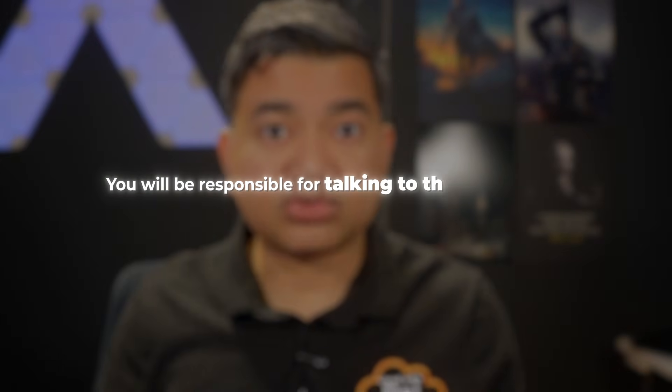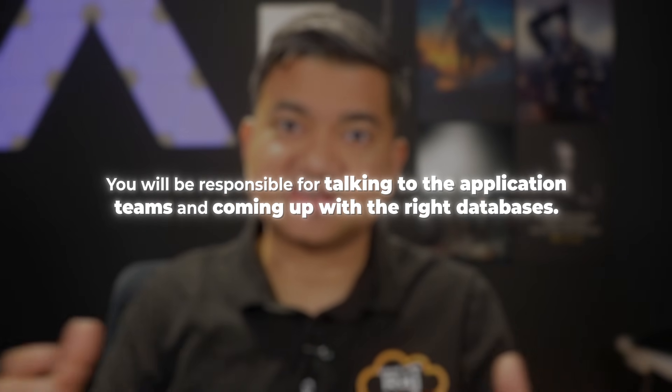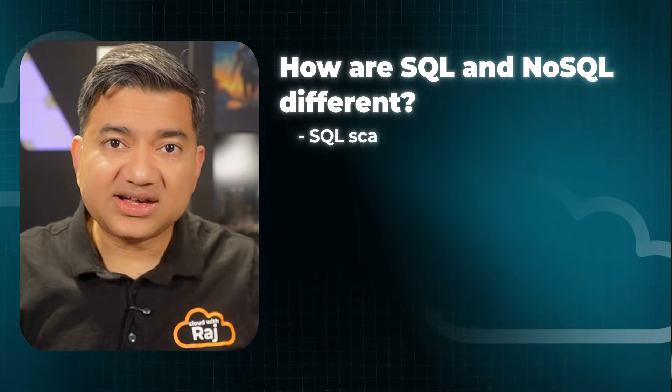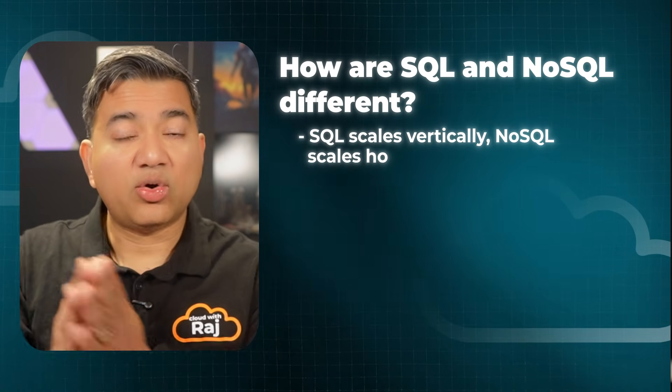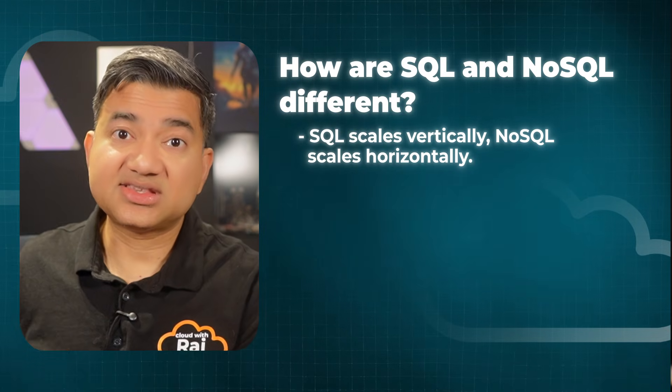As a solutions architect you will be responsible for talking to the application teams and coming up with the right databases. A great answer starts with structure versus semi-structure, schema versus schemaless, and then you talk about other factors — such as how for SQL databases you need to vertically scale the writer instances, whereas NoSQL databases scale horizontally. There are nuances depending on the SQL database: sometimes the storage scales automatically, but the writer instance always needs to scale vertically. With NoSQL, the storage, writer instances, and readers can all scale horizontally.